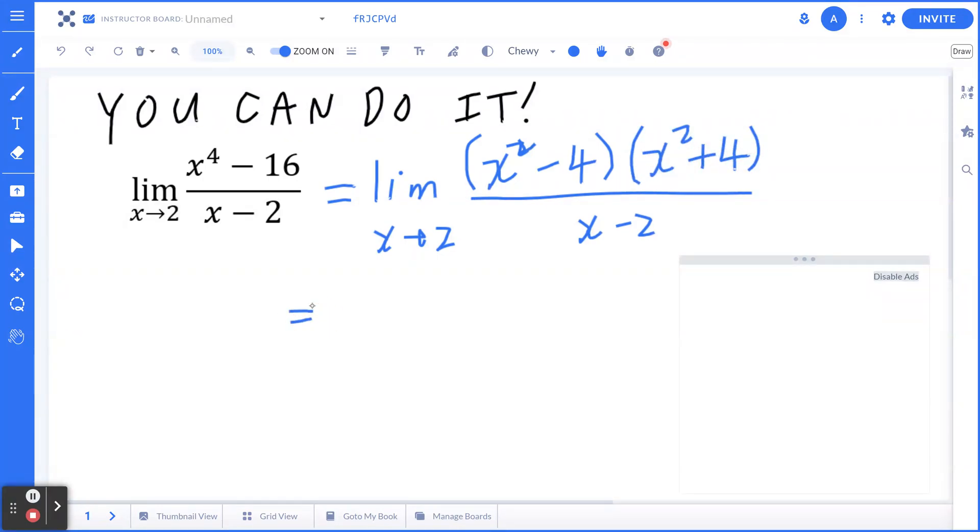Now, notice it's not enough. We can't cross anything else from the top and the bottom yet. So you factor again.